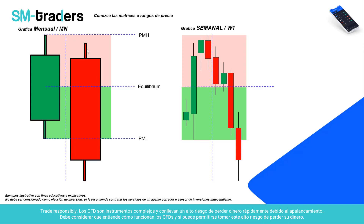Vamos a ver esto trasladado a las gráficas. Estamos en una gráfica mensual con una vela alcista. Supongamos que venimos de un impulso alcista y se ha formado esa vela mensual positiva: arrancó, hizo un movimiento bajista, creció hacia arriba, dejó un máximo y tuvo un cierre. Al siguiente mes aparece con una pequeña diferencia de altitud; si abre más bajo o más alto, eso significa un gap en el mercado, que en otras temporalidades se verá más claro.